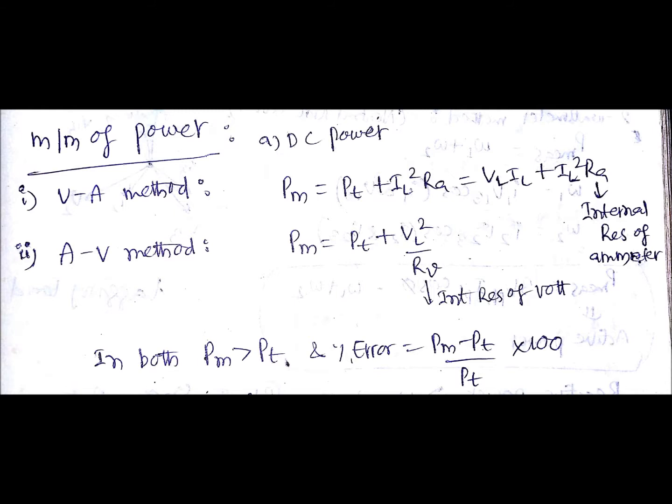Error is always due to the load side connected instrument. In case of VA, you are connecting ammeter towards the load, so the error will be IL square into RA. In case of AV method, you are connecting voltmeter towards the load, so the error is VL square divided by RV.